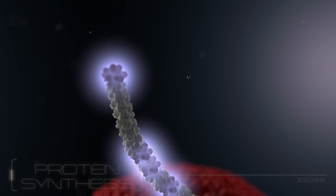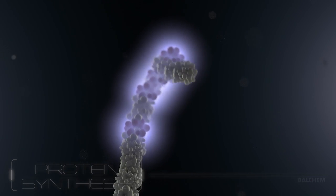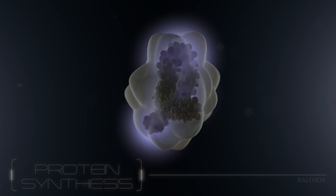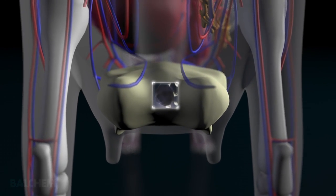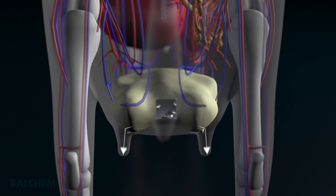When the milk protein chain is finished, it is folded into a precise shape critical to its function. It is then released and shepherded to the mammary alveoli, where it's secreted in milk.